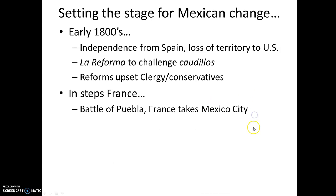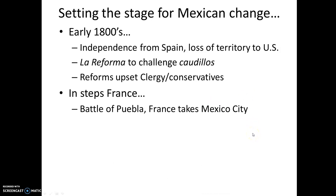The infighting between these factions opened the door for French Emperor Napoleon III to send in troops in 1861, really trying to resurrect the French Empire in the Americas. On May 5, 1862, a small Mexican force defeated a much larger French force at the Battle of Puebla, which is now celebrated as Cinco de Mayo. But conservative forces eventually allowed the French to take over Mexico City — the second invasion and takeover of their capital in under 15 years.